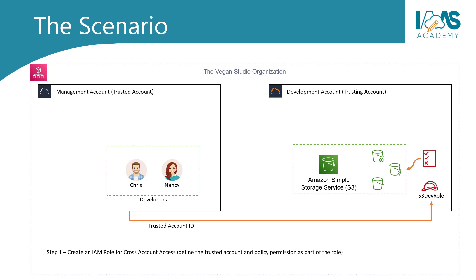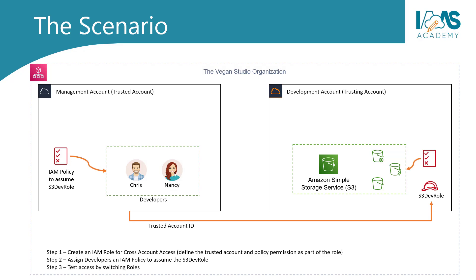For this lab, we will be naming our IAM role S3 dev role. Step two is where we assign the developers an IAM policy to assume the S3 dev role from the development account. In this step, we will create an IAM policy and attach it to our developers, enabling them to be able to assume the S3 dev role. And finally, in step three, we will test our cross-account access configuration. Let us get started with the lab — join me in the AWS Management Console.